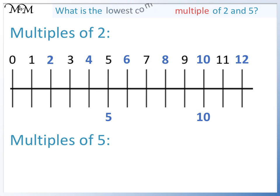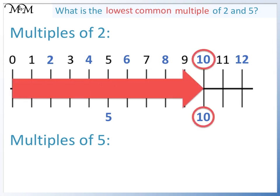We want the lowest number in common to both lists. This is 10. So the lowest common multiple is 10.